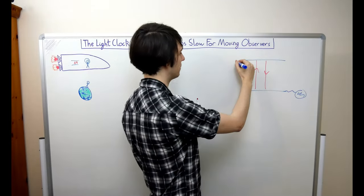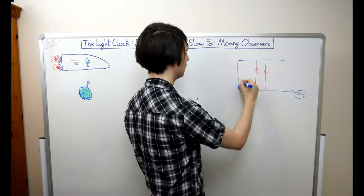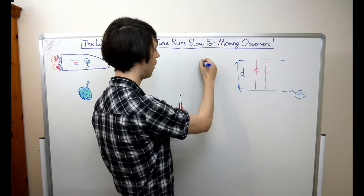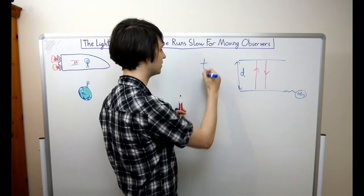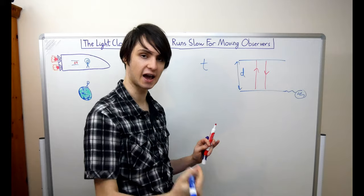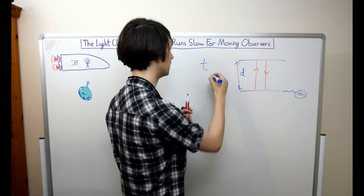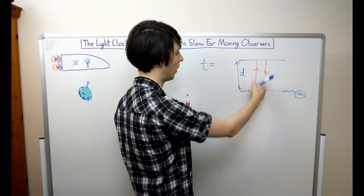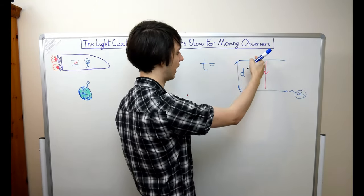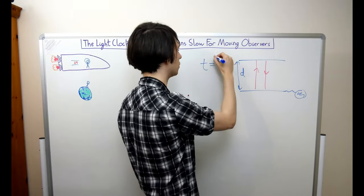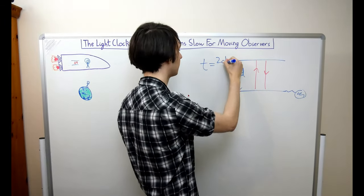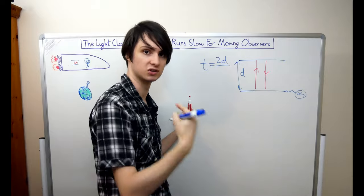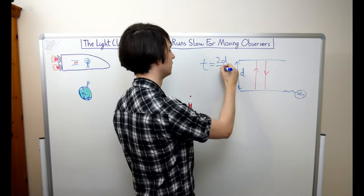If the separation between the mirrors is a distance d, then the time between ticks of the light clock as measured by the astronaut is the distance travelled by the light beam — one length d up and one length d back down, so 2d — divided by the speed of the light beam, which is the speed of light c.